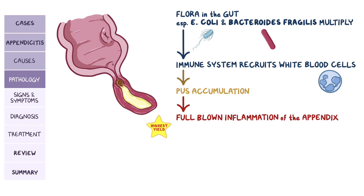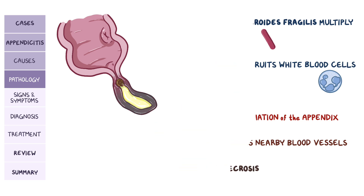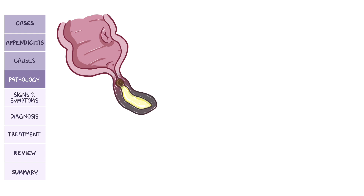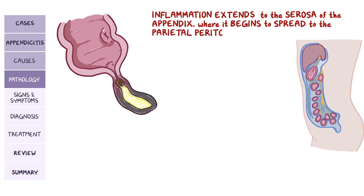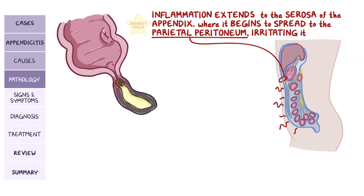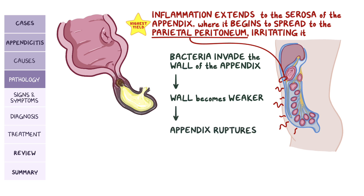As the pressure keeps growing and the appendix continues to swell up, it will push on and compress nearby small blood vessels, causing ischemia and local necrosis. Remember that as a consequence, inflammation extends to the serosa of the appendix, where it begins to spread to the parietal peritoneum, irritating it. The growing colony of bacteria can then invade the wall of the appendix, causing more inflammation, and the wall becomes weaker and weaker to the point where the appendix can rupture. This is one of the worst complications of appendicitis, as it allows bacteria to escape into the peritoneum and cause peritonitis.